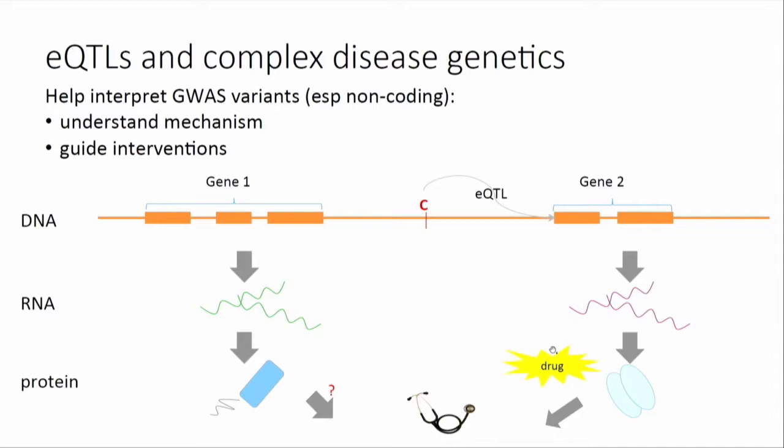This is sort of the cartoon picture — the nice dream — and why we ran a lot of these big EQTL studies to begin with: the thinking that we could use them to interpret GWAS variants in this sense. There are a lot of complications on top of this, and I'll talk about a few of those today.